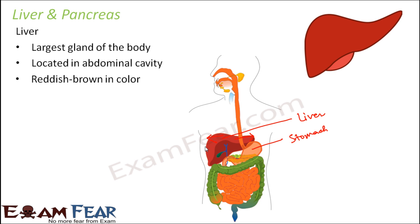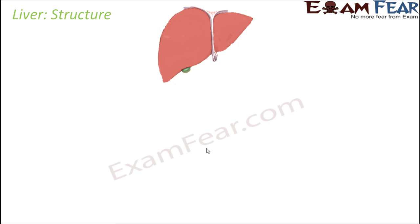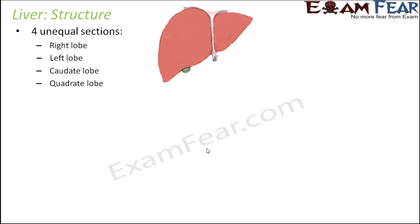The liver is generally made up of soft tissues, and those tissues are covered by another layer of connective tissue. So the entire liver has a covering of connective tissue. We will look at the structure of the liver in detail.